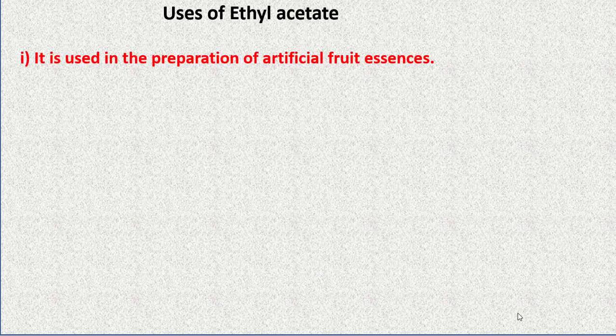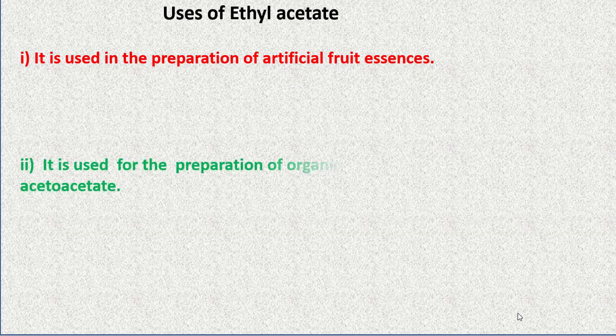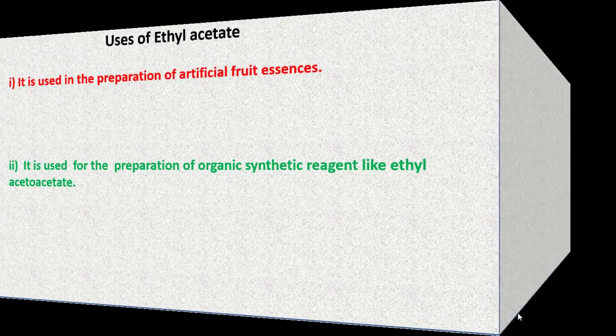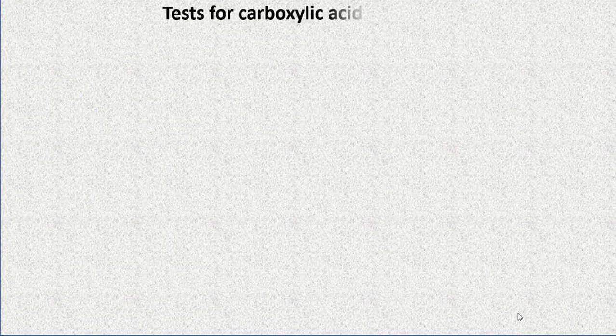Uses of ethyl acetate: it is used in the preparation of artificial fruit essence. It is also used for the preparation of organic synthetic reagents like ethyl acetoacetate.